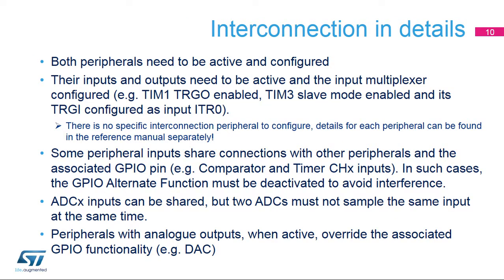These recommendations should be followed to ensure a proper interconnection between peripherals and avoid unexpected behaviors. Both peripherals need to be active and their inputs and outputs configured. When peripheral inputs share connections with other peripherals, associated GPIO alternate functions must be deactivated to avoid interference.